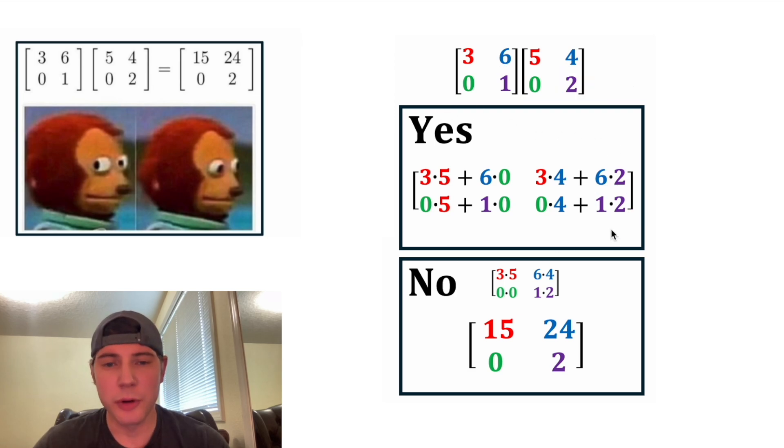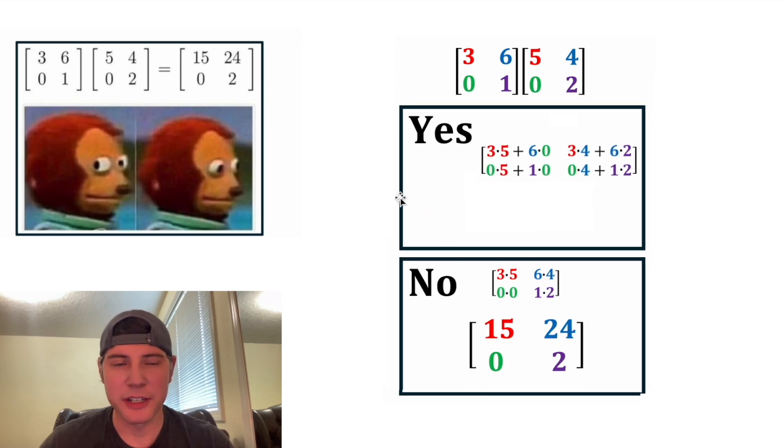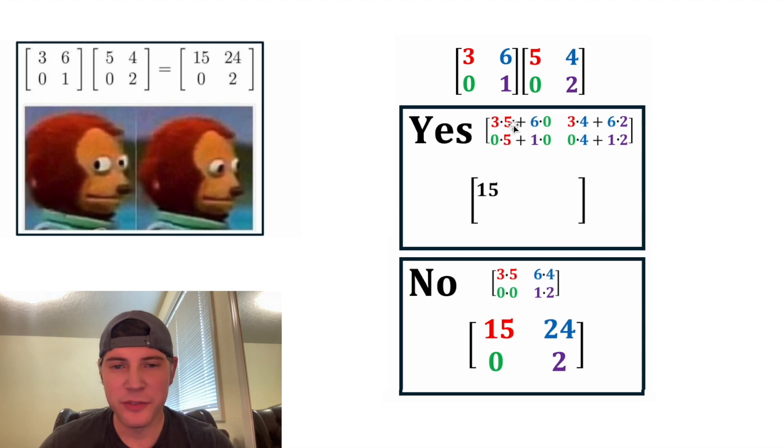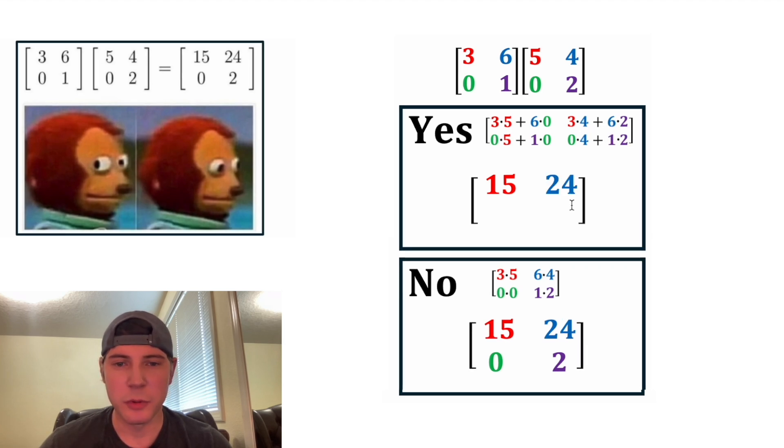Now this is the correct way to do matrix multiplication. Let's see what the correct answer is. 3 times 5 is 15 plus 6 times 0, that gives us 15. 3 times 4 is 12 plus 6 times 2 is 12, 12 plus 12 is 24.